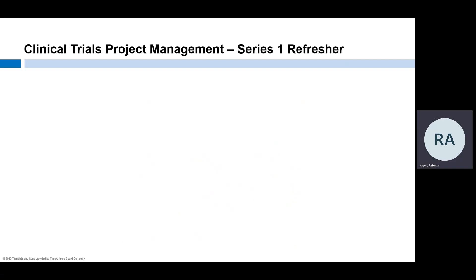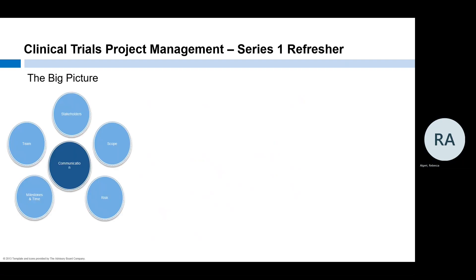Let's take a quick moment to refresh your memory on key points from Series 1, which we will build on in this series. Remember our big picture: gather the team, know your stakeholders, understand project scope, manage risk, identify milestones and time, and make sure communication is central to all. In this series, we're going to get into more detail about scope as we explore the protocol, manual of operations, monitoring, and data management plans.